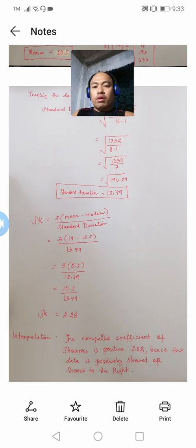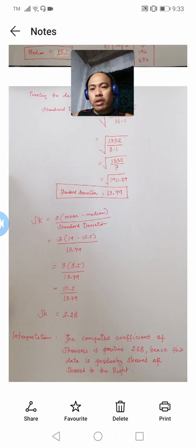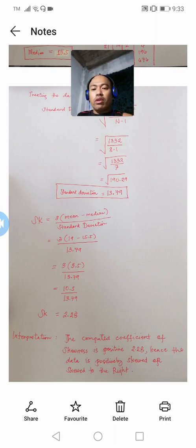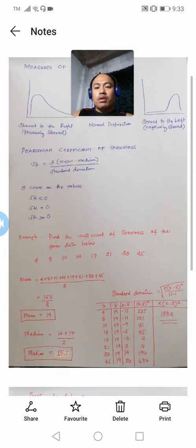Since we now have values for all variables in the coefficient of skewness formula, we substitute them in: 3 multiplied by 19 minus 15.5, all over 13.79. Simplifying further, we get 10.5 over 13.79, which gives a coefficient of skewness of 2.28, and that is positive. Therefore, the computed coefficient of skewness is positive 2.28; hence, the data is positively skewed or skewed to the right.